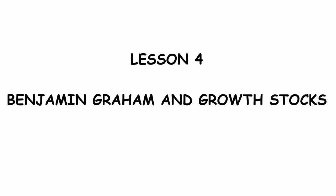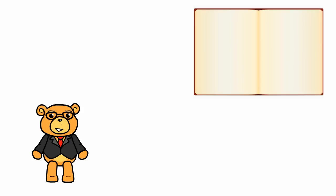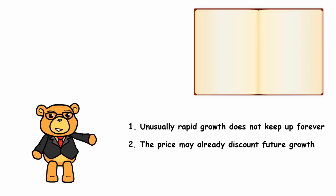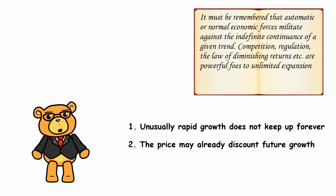Lesson 4: Benjamin Graham and Growth Stocks. Graham was wary of investing in growth stocks for two reasons. One, unusually rapid growth does not keep up forever. Two, the price may already discount future growth. Automatic or normal economic forces militate against the indefinite continuance of a given trend. Competition, regulation, and the law of diminishing returns are powerful foes to unlimited expansion.